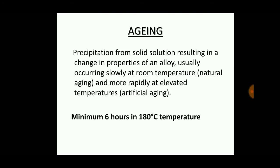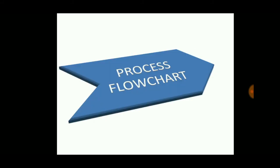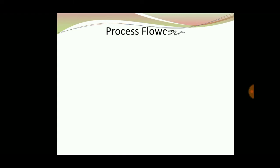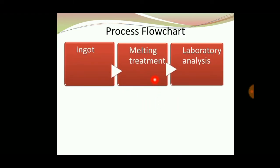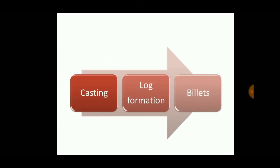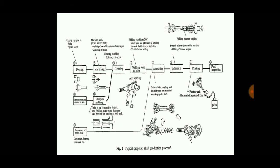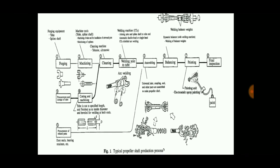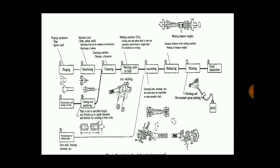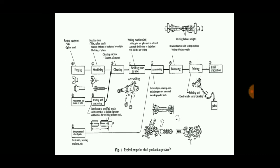Aging is also a temperature-related process to retain the properties of an alloy, with a minimum of six hours at 180 degrees Celsius. The complete process flowchart is: ingot → melting → laboratory analysis → continuous casting → log formation and billets → sample checking → extrusion → die heating and billet heating → printing → cutting → first inspection → aging → machining and cleaning → welding → assembling → balancing → painting → final inspection.